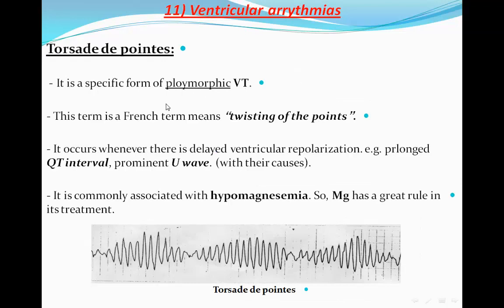Torsade de Pointes is a French term meaning 'twisting of the points.' It is a specific form of polymorphic VT and occurs whenever there is delayed ventricular repolarization, such as prolongation of the QT interval or a prominent U-wave. Prolongation of the QT interval or prominence of the U-wave can predispose to this very serious arrhythmia. It is commonly associated with hypomagnesemia, which is why magnesium plays a very important role in its treatment.